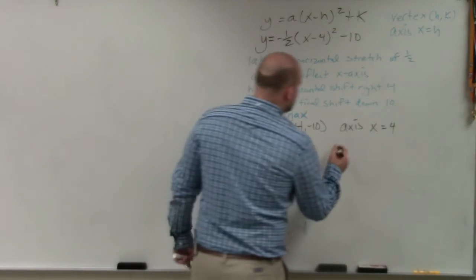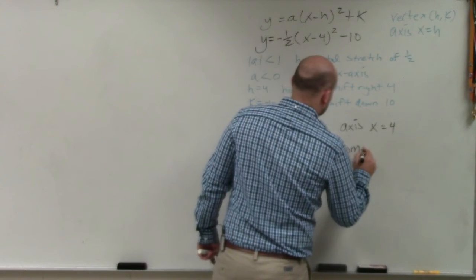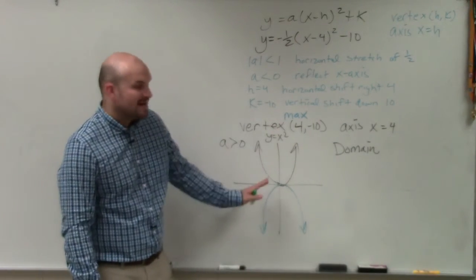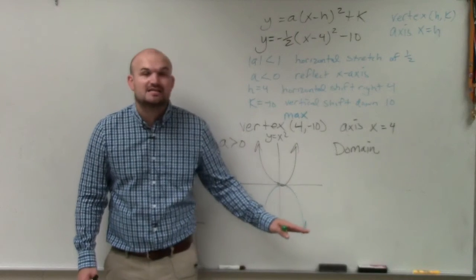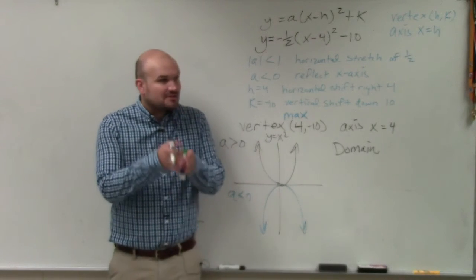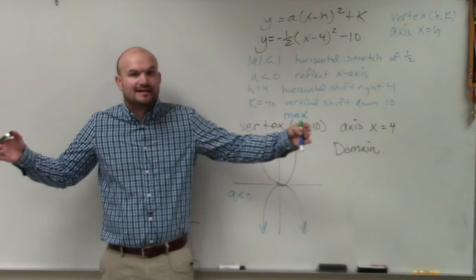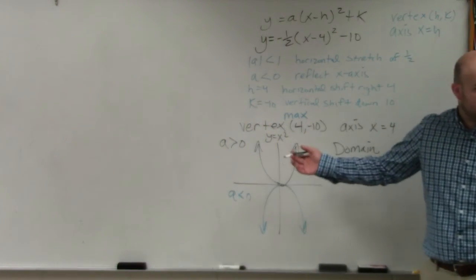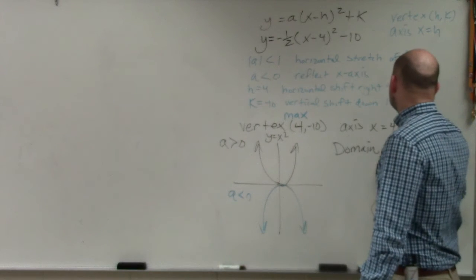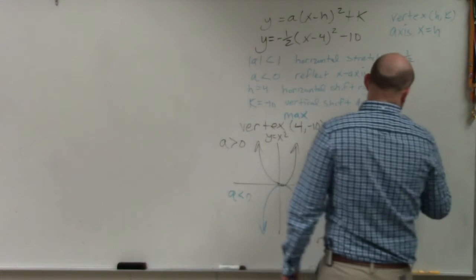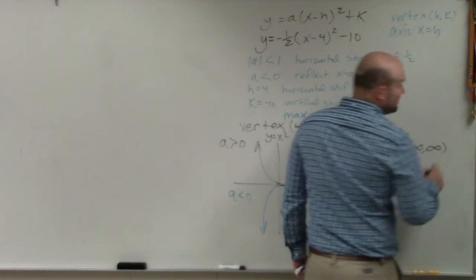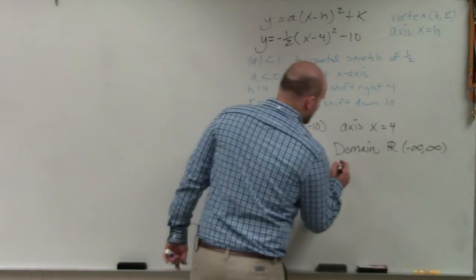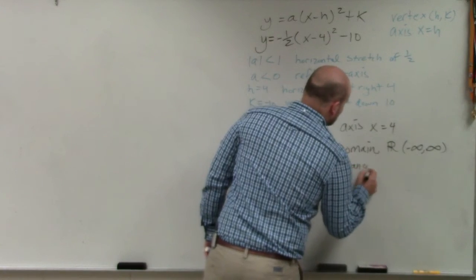And then domain, I'm going to do this quickly, but I'll explain it further. The domain is the set of all x values, the x values that make up the graph. As this graph goes, you can see that it's continually expanding. So there is not an x value that you cannot plug in that would not be a part of this graph. So our domain is called all real numbers, or from negative infinity to infinity.